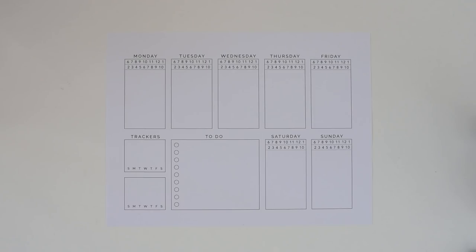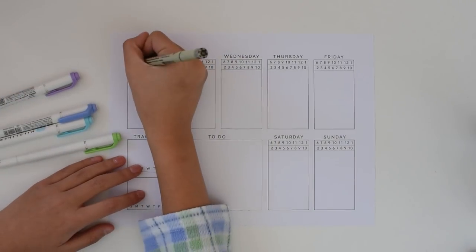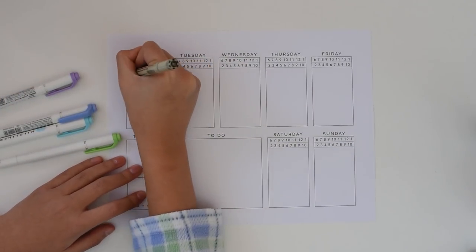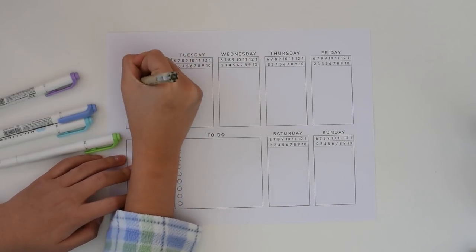Now on to actually planning for these activities. I'll be using a weekly planner printable that I made. I'll link it in the description. You can also use a bullet journal, a planner, or any other system you like.